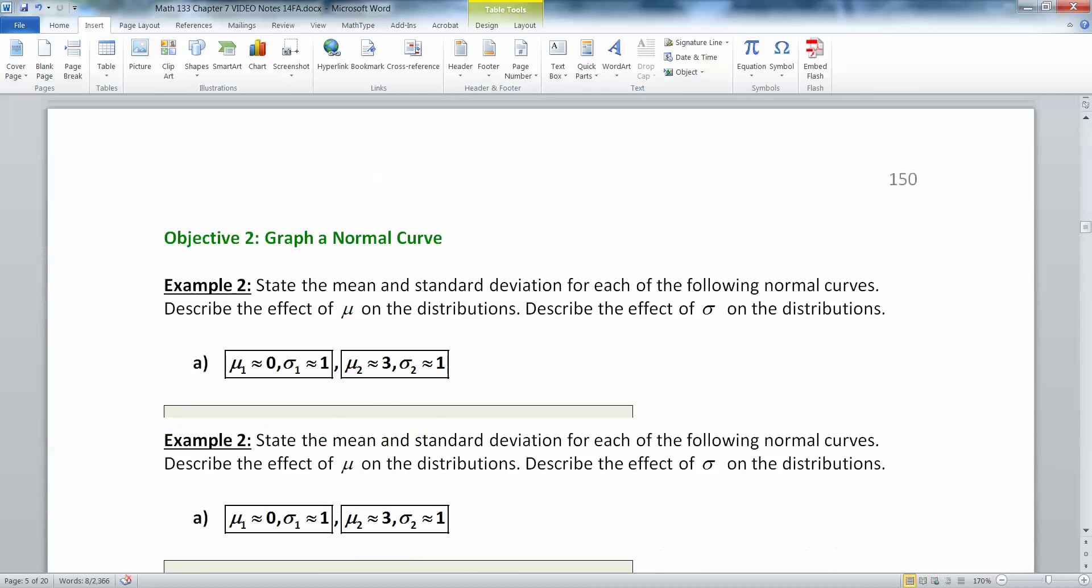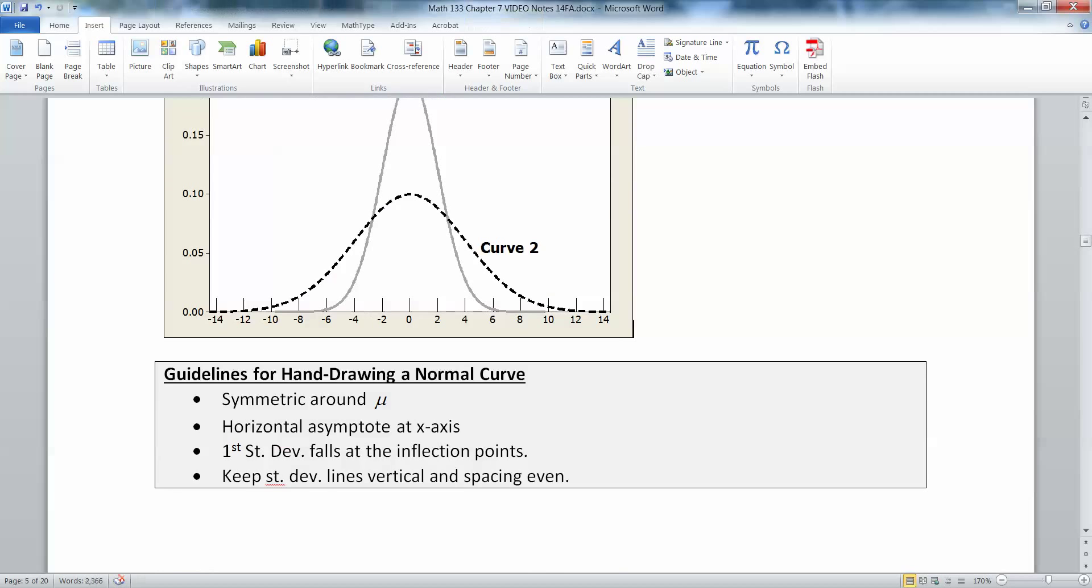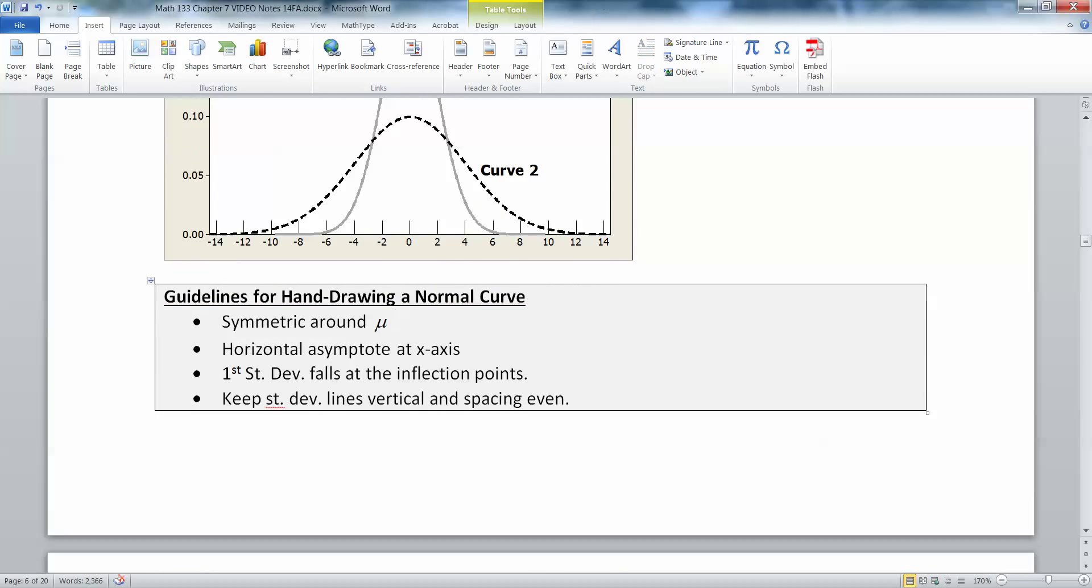All right. Now you're going to be drawing a lot of these by hand. So when you draw them by hand, you want to pay attention to several things. One, you want to draw a graph that is symmetric around your mean. Make sure it's a symmetric graph. Make sure it looks like a normal curve. Number two, you want to make sure you have a horizontal asymptote at your x-axis. Don't have the curve cross over the x-axis. It has to kind of surf along it and disappear.